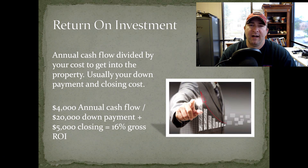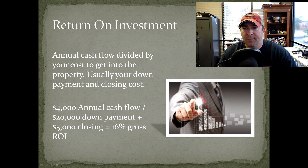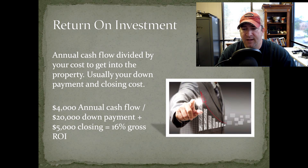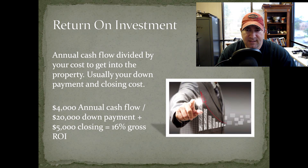Return on investment, or ROI, is essentially your annual cash flow divided by your cost of getting into the property — typically your down payment plus closing costs. So if you get $4,000 in annual cash flow and divide that by the $20,000 down payment plus $5,000 in closing costs on a $100,000 home, that gives you $4,000 divided by $25,000, which is a 16% gross return on investment. Is that good? It looks good, but if you factor in vacancy, repairs, and CapEx, that number is going to shrink quickly.